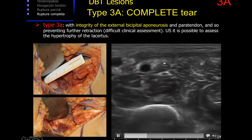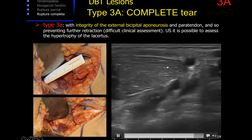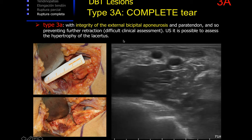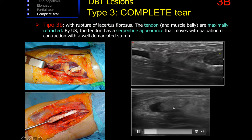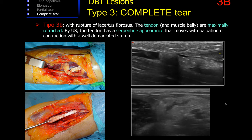In the short axis, we can clearly show the amount of retraction — in this case a retraction of only 4 cm in a complete tear. Complete tears associated with lacertus fibrosus tears are the most retracted, generally over 8 cm. We classified this type of tears as Type 3b ruptures. On ultrasound, the tendon has a serpentine appearance, moves with palpation and compression, and also with contraction of the muscle, with a clearly well-demarcated stump.